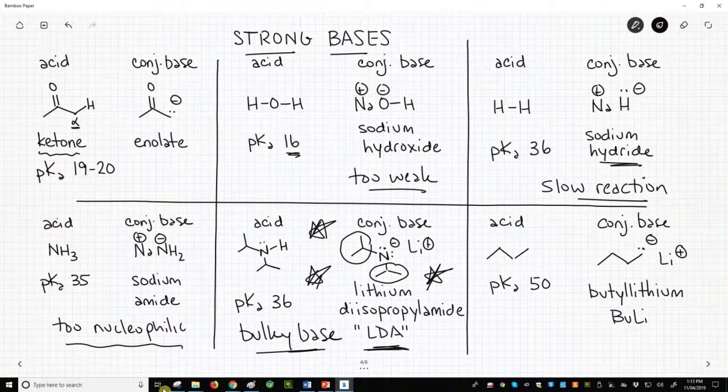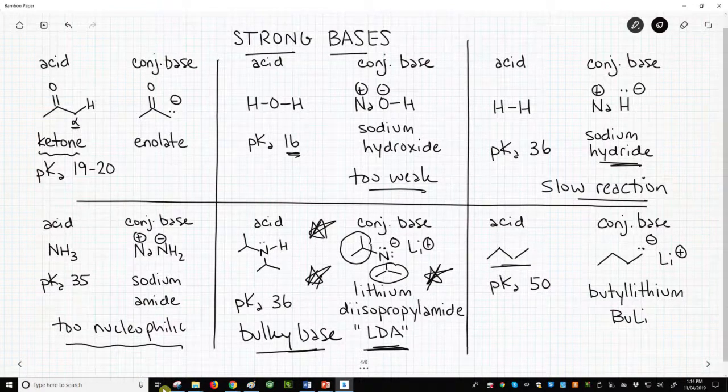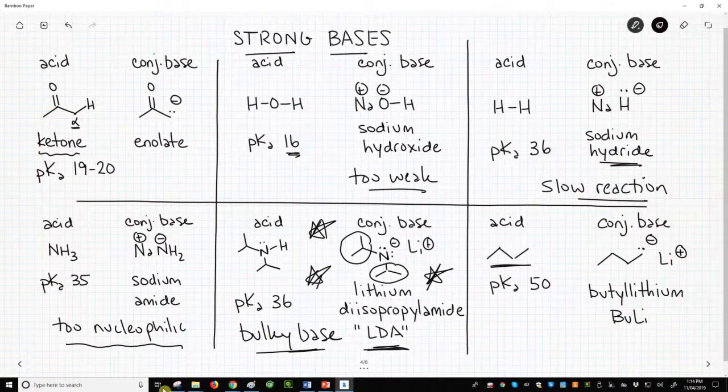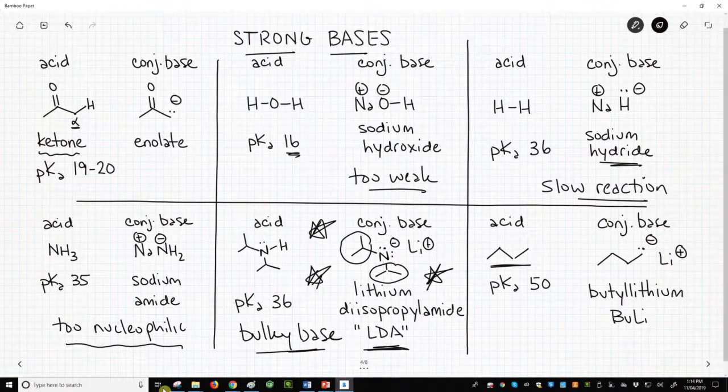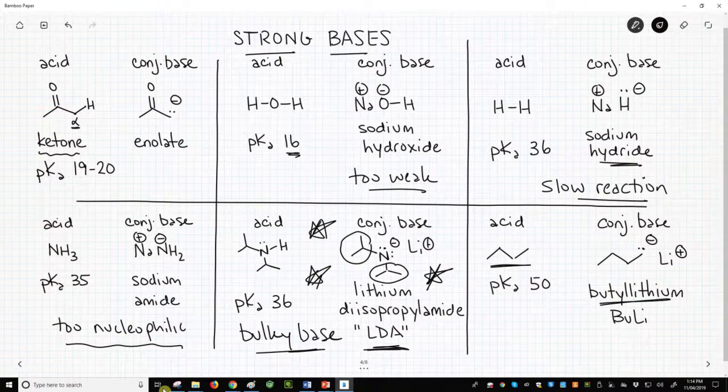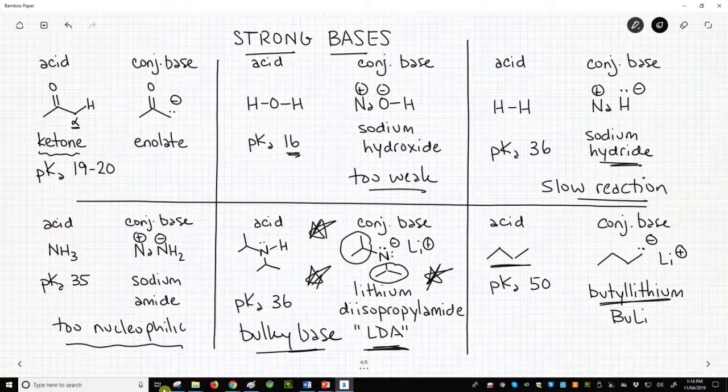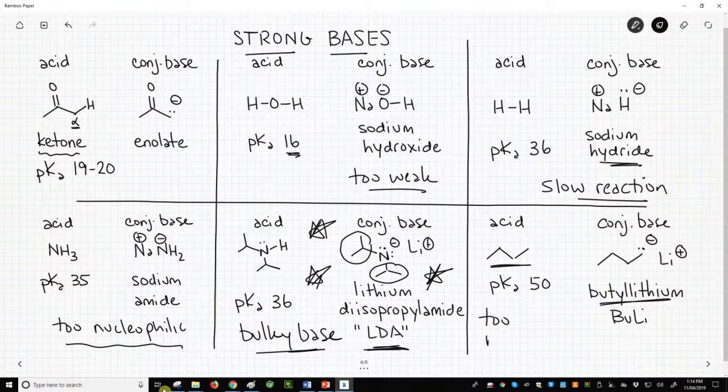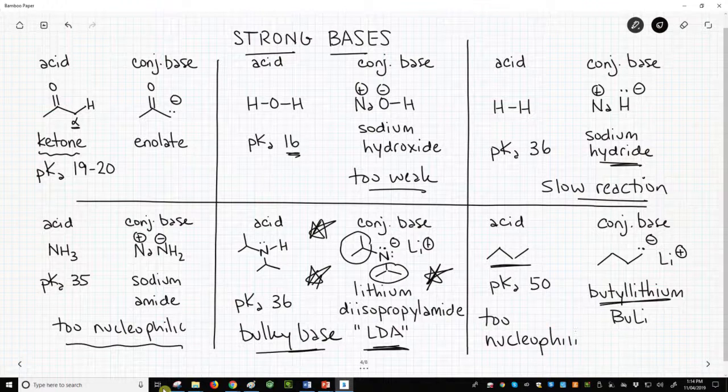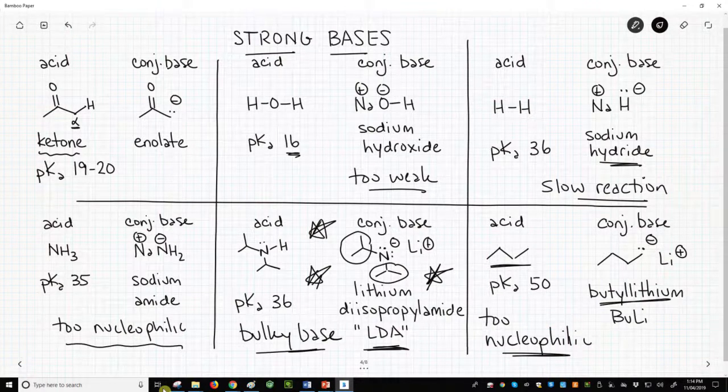Finally, on the bottom right is butane as a super weak acid. pKa is 50 and butyllithium, sometimes written just BULI. Butyllithium is an organolithium. It's an incredibly strong base. But again, as we've seen in past videos, butyllithium loves to attack carbonyls. Butyllithium is a poor choice as a base because it is too nucleophilic for that carbonyl.